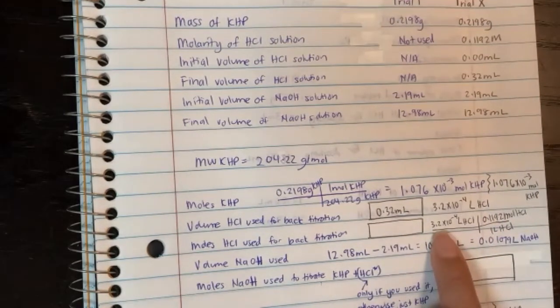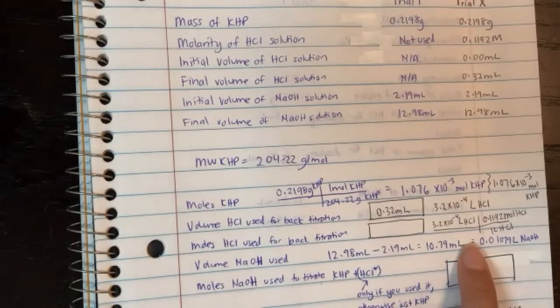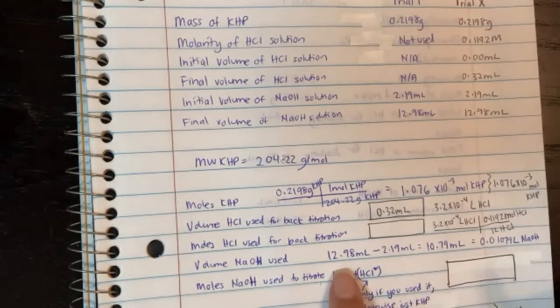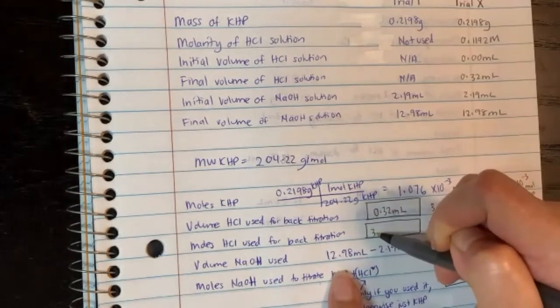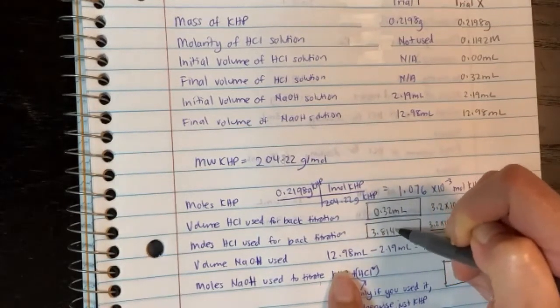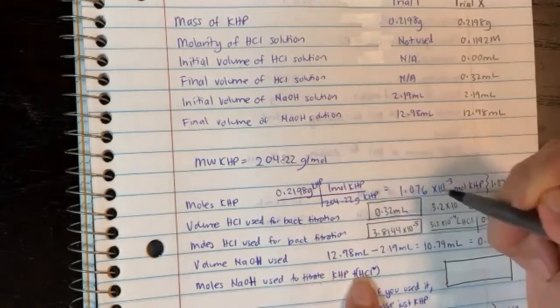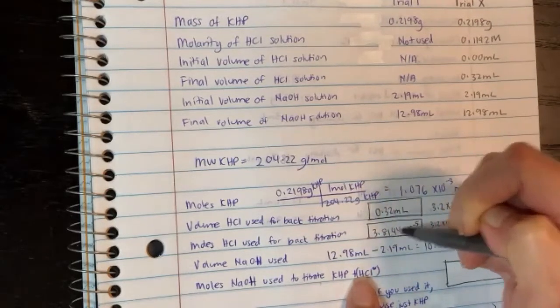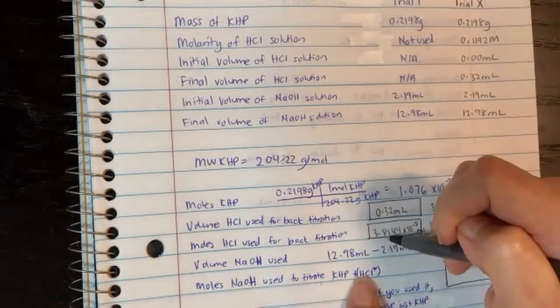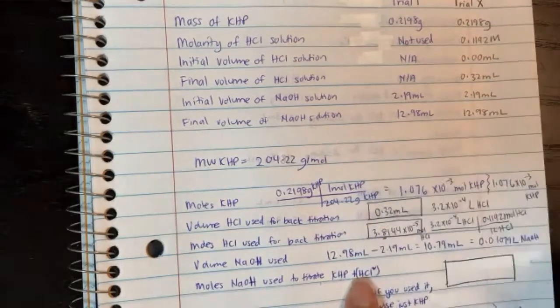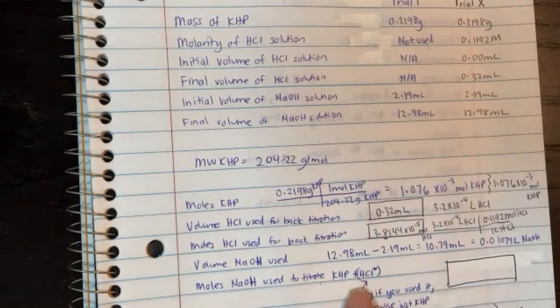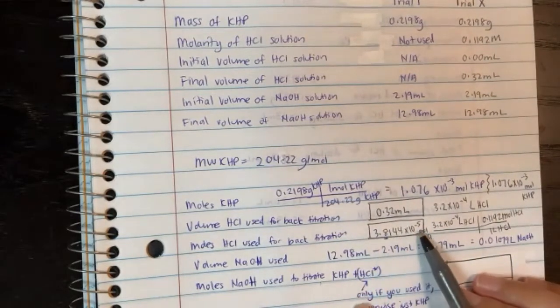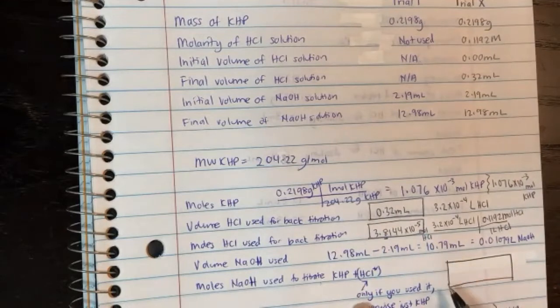So take 3.2 times 10 to the minus 4 times 0.1192 moles divided by one liter. And I will get 3.8144 times 10 to the minus 5 moles of HCl. So in this case here, I only have two sig figs. So I'm going to underline 8 because that's where my significant figures stop. So it's really just 3.8 times 10 to the minus 5 moles of HCl.